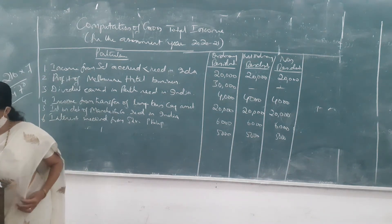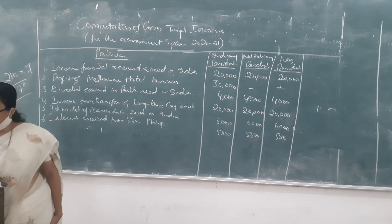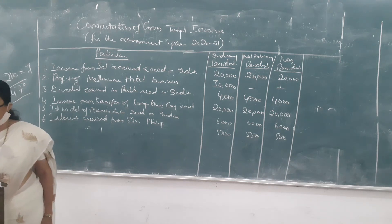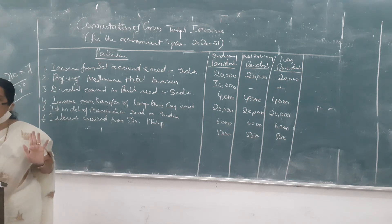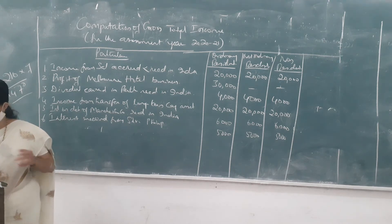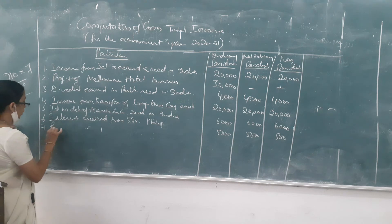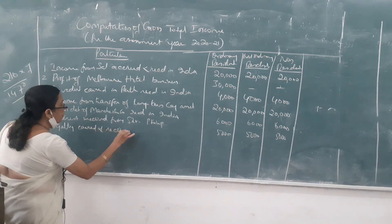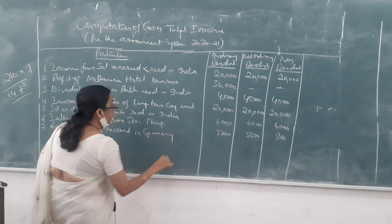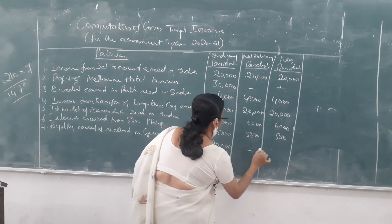Seventh: royalty received in Germany from Shri Kailash, a resident in India, for technical services provided for a business carried on in Germany — 20,000. Royalty is received in Germany and also earned in Germany; not earned or received in India. So it is applicable to ordinary resident only. Amount: 20,000.